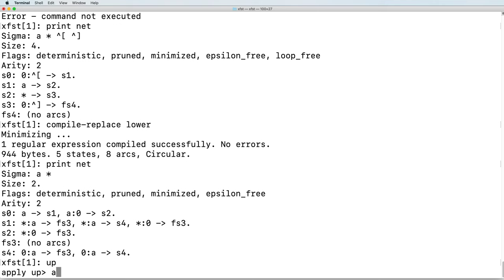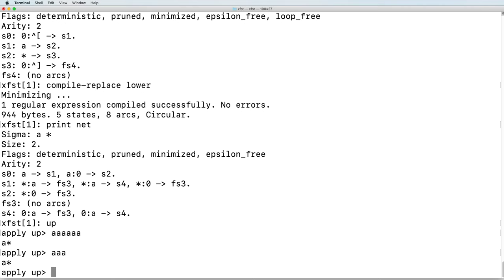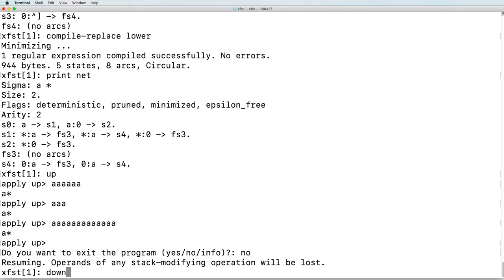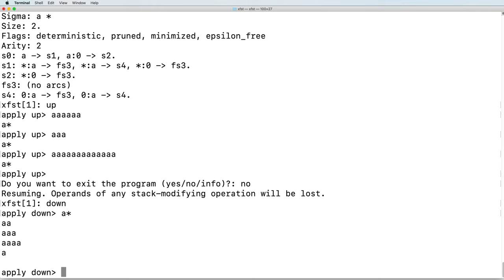We can validate this by typing in a lower side string. Every lower side string consisting of zero or more A's will map on the upper side to A star. If we run apply down on A star, it will map to all of the possibilities. Here, only a few are shown.